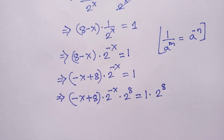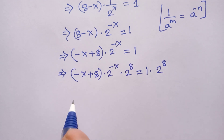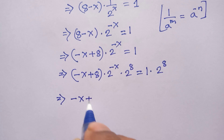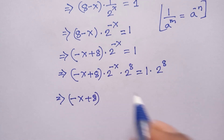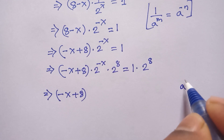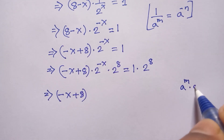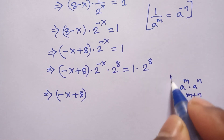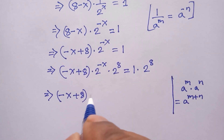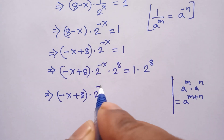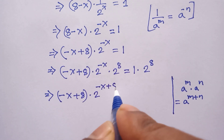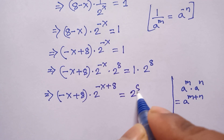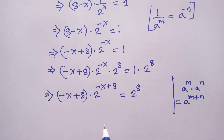We can write (−x + 8) and apply the law a^m times a^n equals a^(m+n). Applying this formula, we get 2^(4·(−x + 8)) equals 2^(4·8). So the equation becomes (−x + 8) times 2^(−x + 8) equals 2^8.